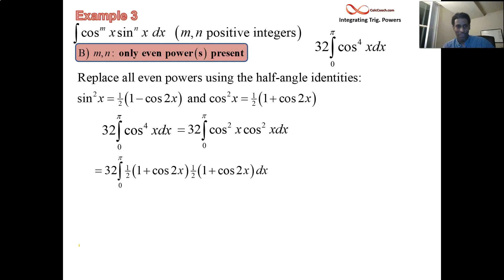What we're going to have then is the half, and the half as a fourth is going to come out and turn that 32 into an 8. And then let's go ahead and FOIL this out. We have 1 plus 2 of those cosine 2x's plus the cosine squared on 2x.